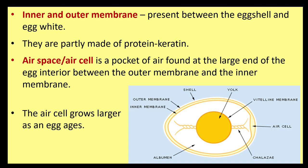The inner and outer membranes are present between the egg shell and egg white, and are partly made of protein keratin.